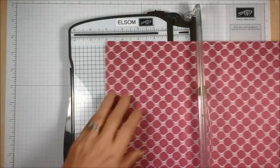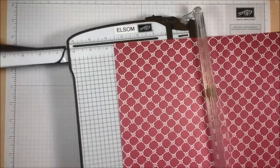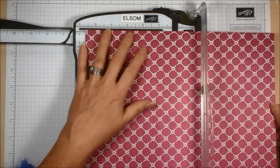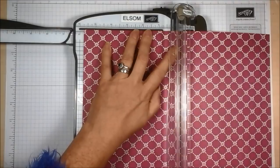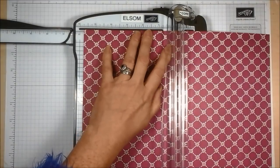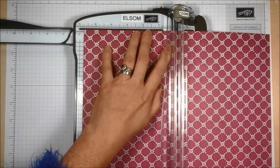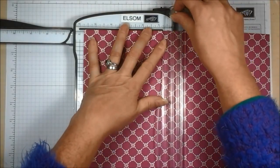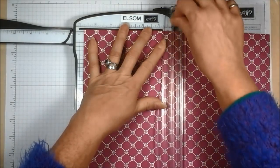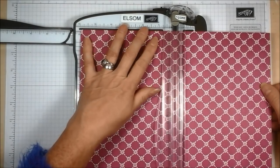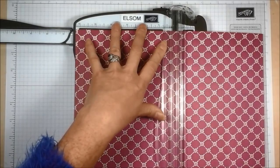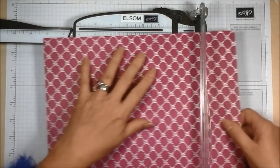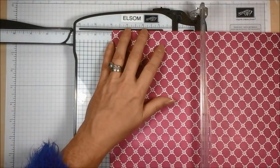With the 12 by 12 piece I'm going to quite simply score it at five and three quarters. I need to take out my extra blade. Score at five and three quarters, score at six and a quarter, turn it around and then score it at four inches.